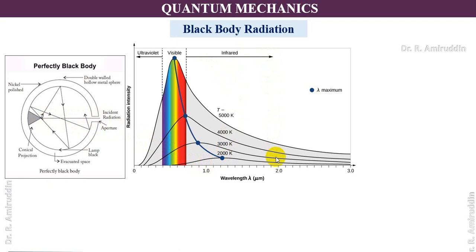If we increase the temperature to 3000 Kelvin, the wavelength coming out from the fine hole decreases. Increasing it further moves the radiation towards the visible region, with the wavelength decreasing further. At 5000 Kelvin, the wavelength decreases further and enters the visible region. So wavelength and temperature are inversely proportional. We will discuss this in detail during Wien's displacement law and Rayleigh-Jeans law in subsequent classes.